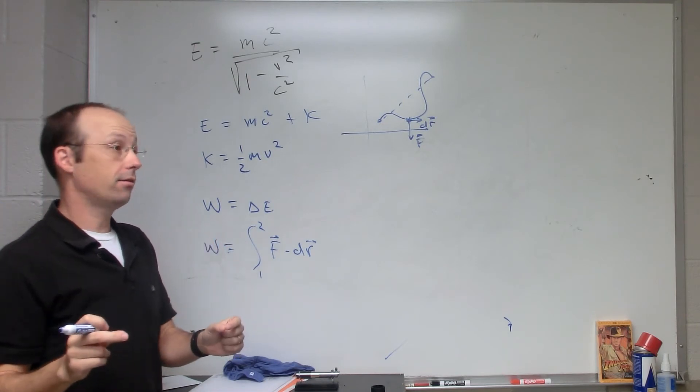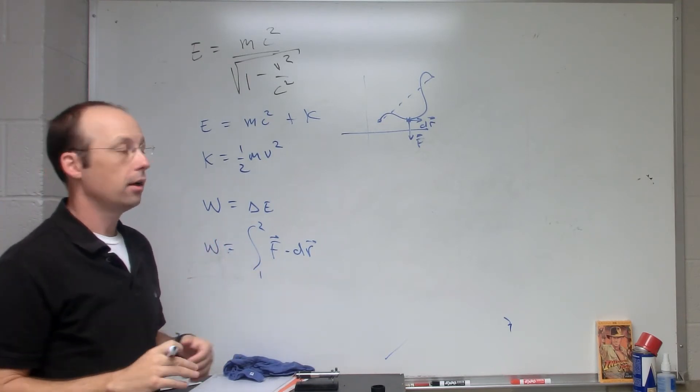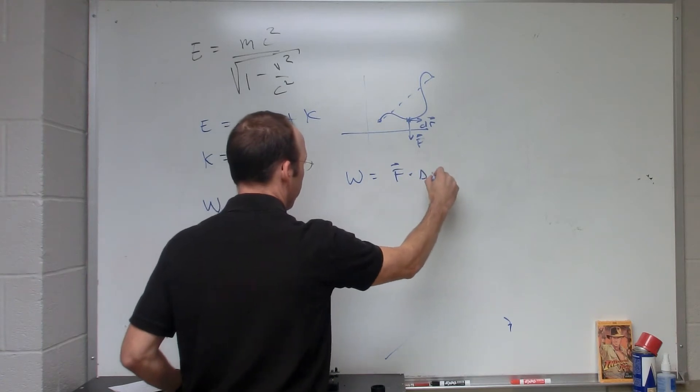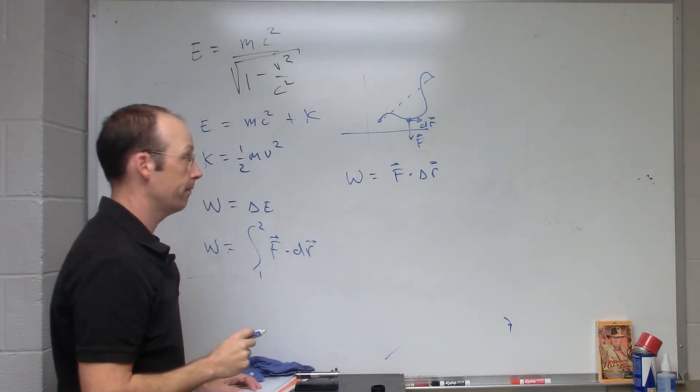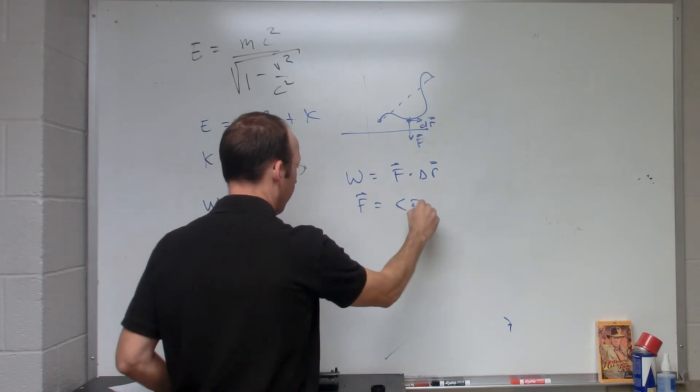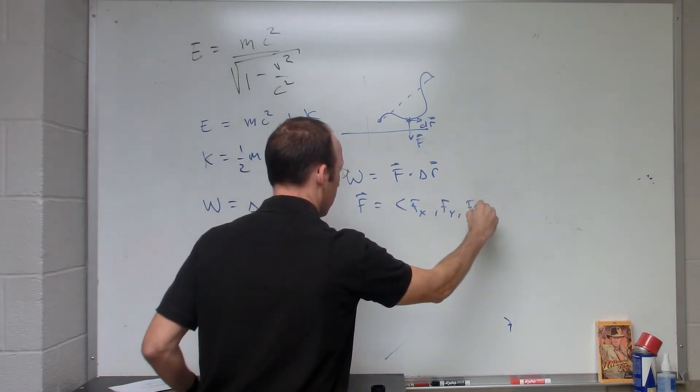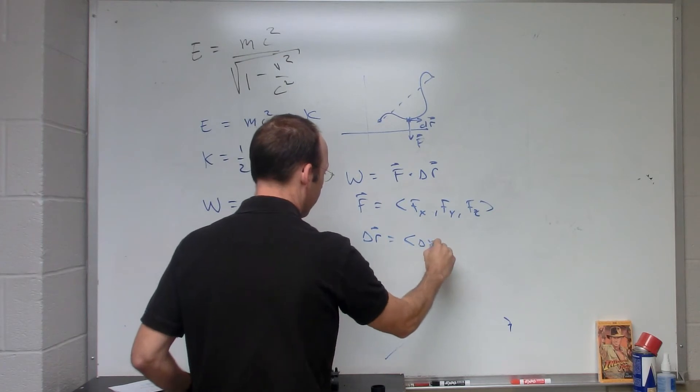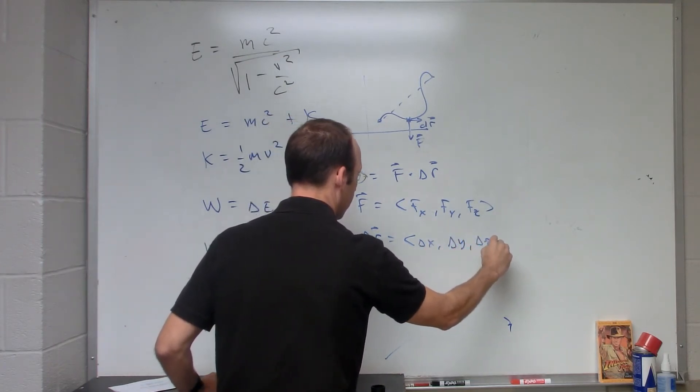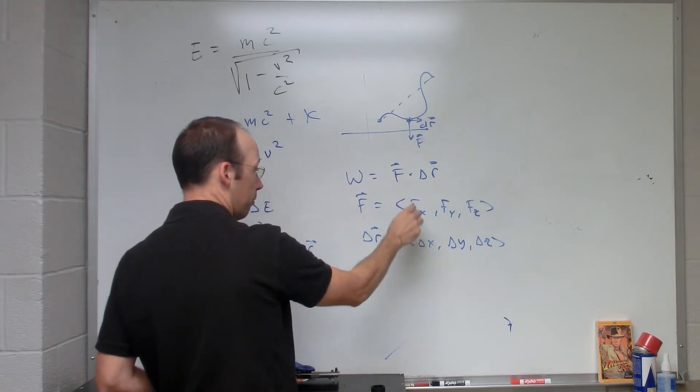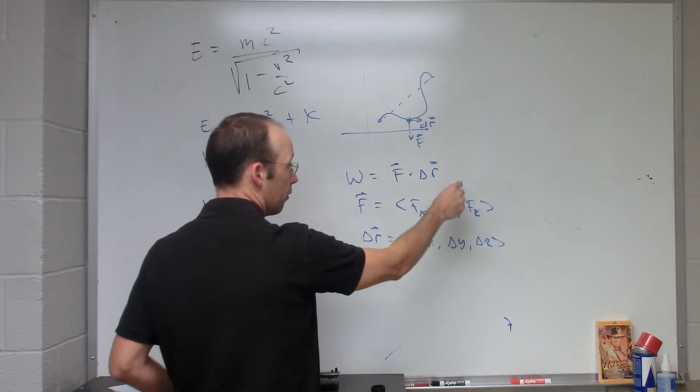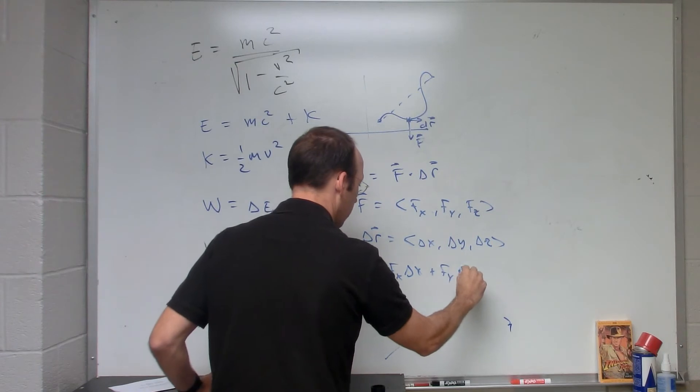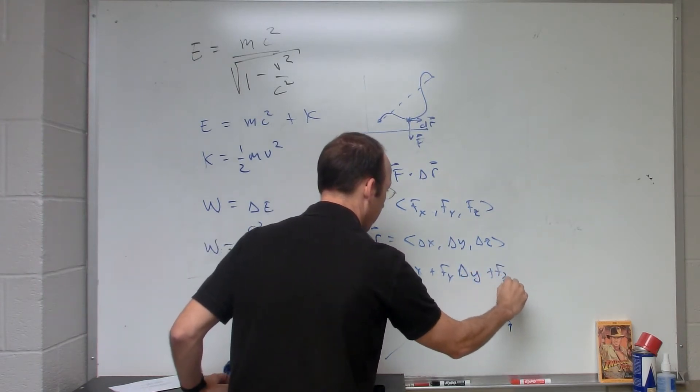So in the cases when the path is constant delta r and the force is constant, then you could just write work equals F dot delta r. This is the dot product. So I can write F equals fx, fy, fz, and delta r equals delta x, delta y, delta z. The work would be the dot product: fx delta x plus fy delta y plus fz delta z.